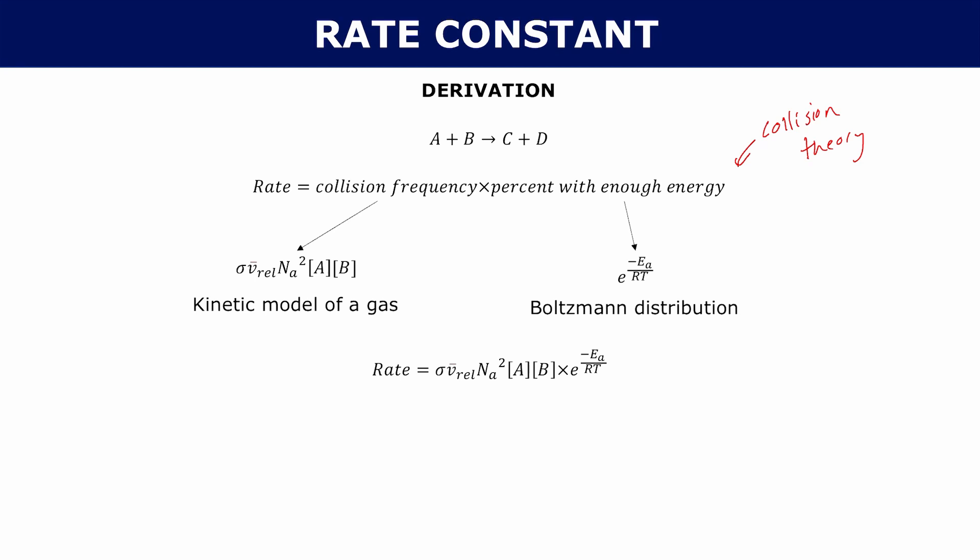From your rate law, the rate is also equal to k times the concentration of A and B. So if we isolate k — because what we really care about is k — your k is just your rate divided by the concentrations of A and B, and from here you can see what we're about to do.